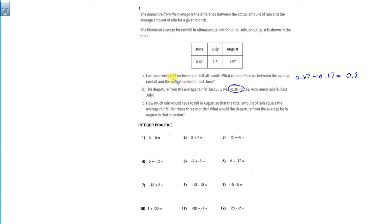It was 0.17, which means that its departure was below what it should have been. So the last answer should have been negative 0.5. If it was above it, it would be positive. If it's below it, it would be negative. So the departure from average rainfall last July was negative 0.36.